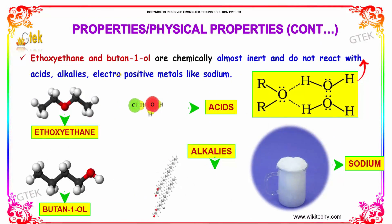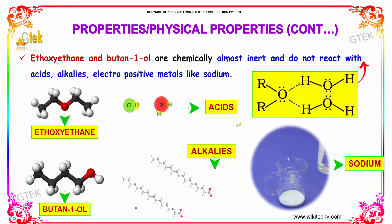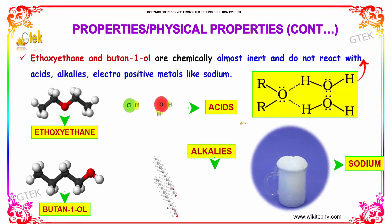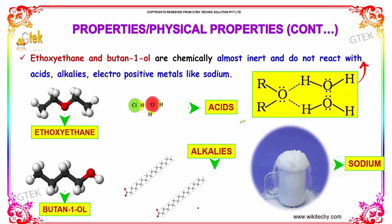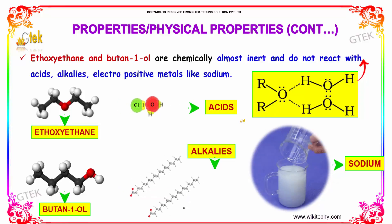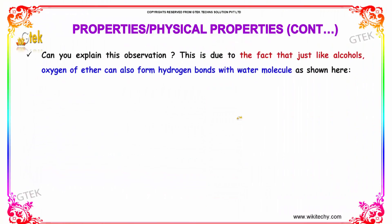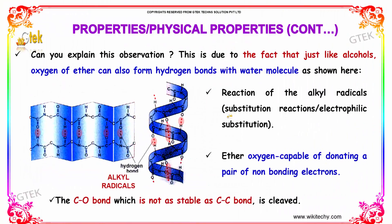Ethoxyethane and butan-1-ol are chemically almost inert and do not react with acids, alkalis, or electropositive metals like sodium. This is due to the fact that, just like alcohols, the oxygen of an ether can also form hydrogen bonds with water molecules, as the ether oxygen is capable of donating a pair of non-bonding electrons.